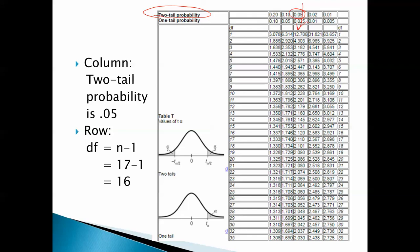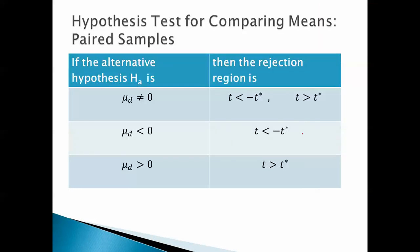And the row, well, the degrees of freedom for this test, the paired samples, is the number of pairs minus one. That's 17 minus one, which is 16. So we want row 16, which means 2.120. That's going to be our value of T star.